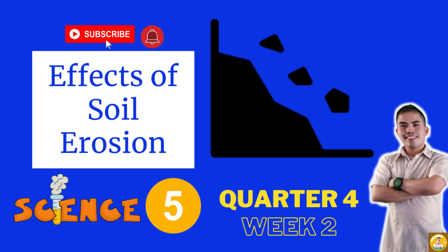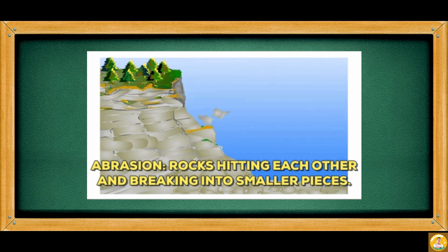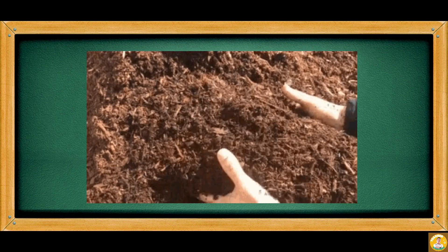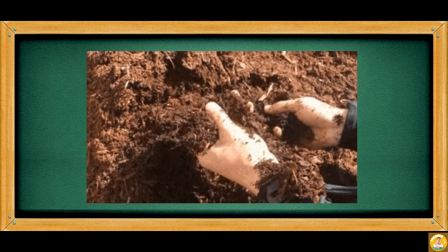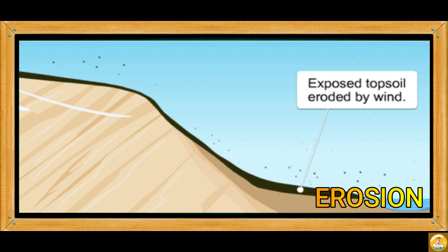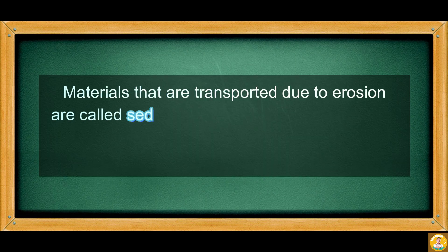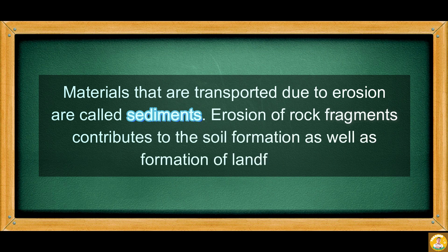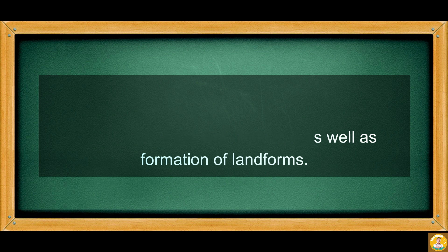This time you will learn about soil erosion and its effect on living things and the environment. When rocks are broken down into different pieces, they do not stay in one place. Some rock fragments become part of the soil; others are transferred from one place to another, which is called erosion. Materials that are transported due to erosion are called sediments. Erosion of rock fragments contributes to soil formation as well as the formation of landforms.